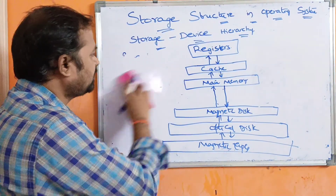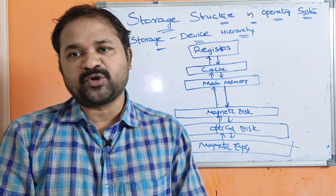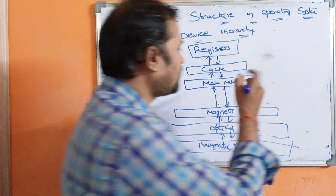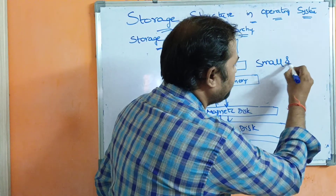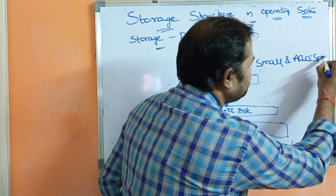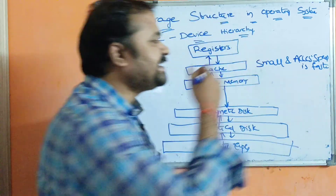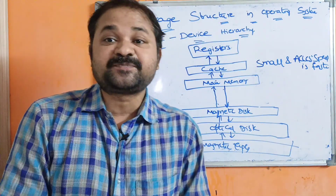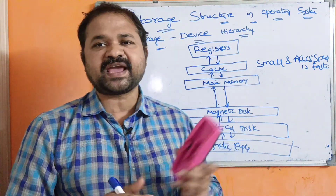The second type of memory is cache memory. Cache memory is very, very small memory, but it is very, very fast memory. Its access speed is very, very fast, and it is also very, very expensive memory.